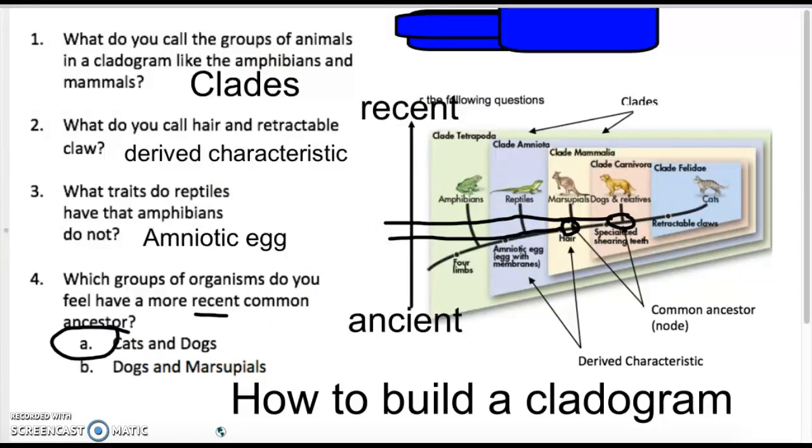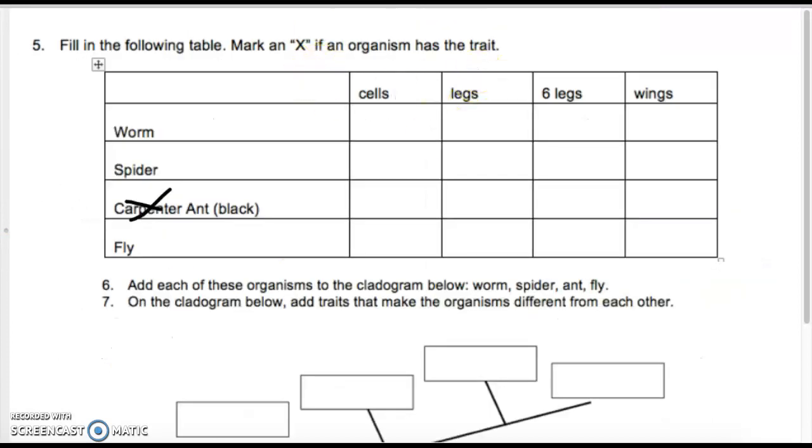Down at the bottom, when you learn how to fill out a cladogram, you look at the derived characteristics and what has in common. What I want you to do is cross out carpenter ant. We're just going to do a regular black ant you would find on a picnic outside. What I want you to do is X what each organism has. Just take a moment and do that.